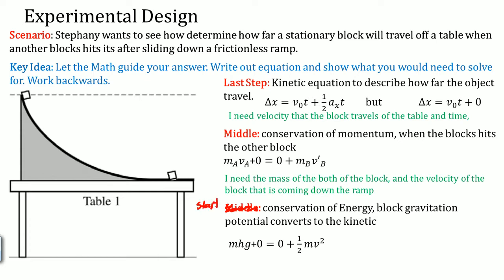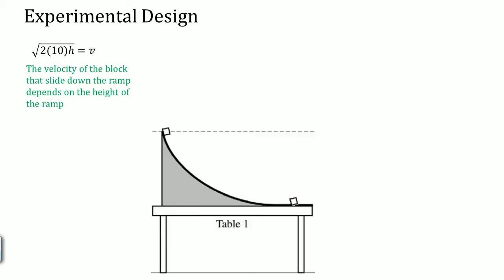You would use conservation of energy. The block's gravitational potential energy is going to be converted to kinetic. At the start, it's MGH at the top, and as it slides down the ramp, all the potential is going to get converted to kinetic, which is one half MV squared. Mathematically, if we work it out and solve for V, that is the square root of 2(10)h equals v. The velocity of the block that slides down the ramp depends on the height of the ramp, nothing else.